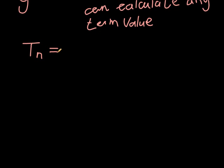It's usually written like this. The formula starts with TN and can be, for example, 7N minus 2 divided by 4N, where N represents the term number.